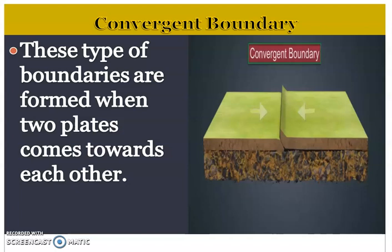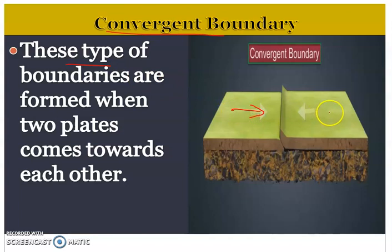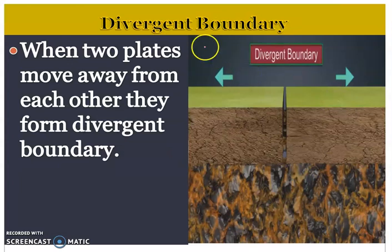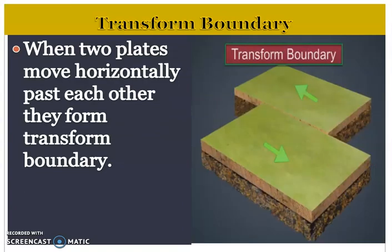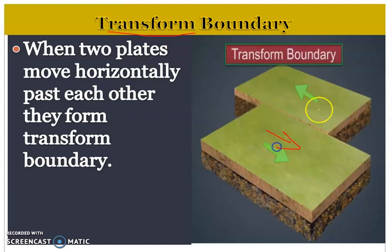These movements of plates can be classified in three ways. The first is the convergent boundary, formed when two plates move towards each other. Divergent boundaries are formed when two plates move away from each other. The third type, the transform boundary, is formed when two plates move horizontally past each other.